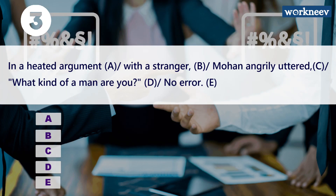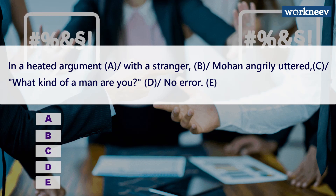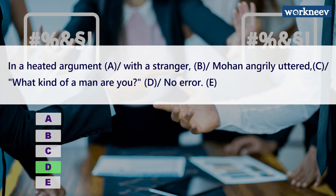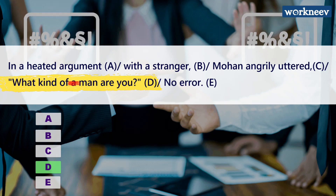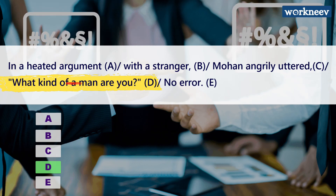Let's move to the next problem: 'In a heated argument with a stranger, Mohan angrily uttered — what kind of a man are you?' Pause the video and try to find the answer. The correct answer is option D. The error is 'what kind of a man are you' — the correct form should be 'what kind of man are you.' Whenever there is a word like 'kind of' or 'sort of,' it should not be followed by an article. So we remove the article 'a,' giving us 'what kind of man are you.'